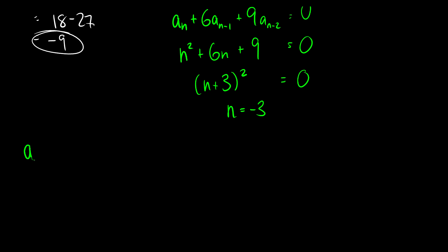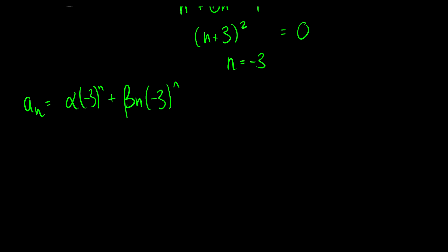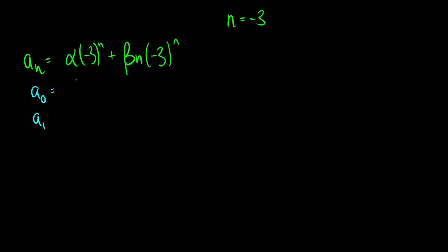Because we have multiplicity 2, our solution takes the form a_n = alpha·(−3)^n + beta·n·(−3)^n — we multiply the second term by n so they are not the same value. Plugging in a_0 = 3: alpha·(−3)^0 + beta·0·(−3)^0 = alpha = 3.